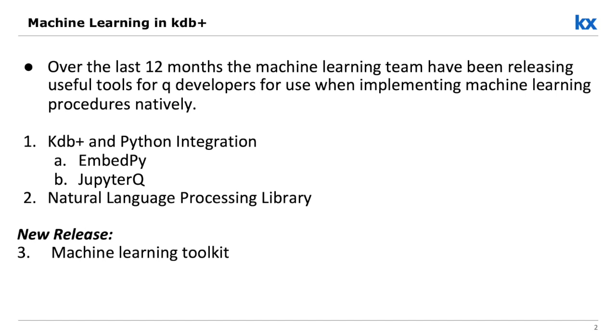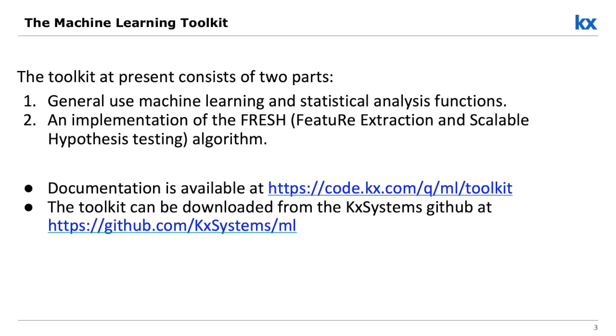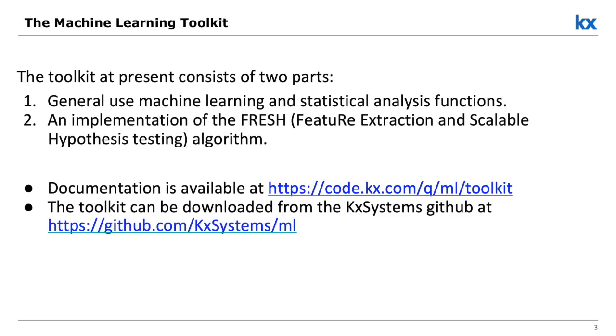Our newest release is the initial release of our machine learning toolkit. The toolkit currently comprises two sections, which will be expanded over time. We have general use machine learning functions, and my presentation is going to largely deal with the FRESH algorithm — a feature extraction algorithm for taking structured data and compressing it down for use in machine learning applications. It's simpler than neural networks but along the same idea. This is all fully documented, available on go.kx, and free for anyone to use — you can download it from GitHub.